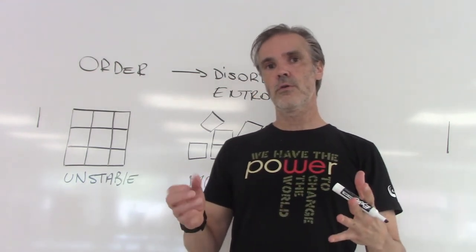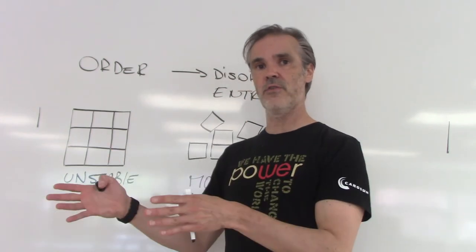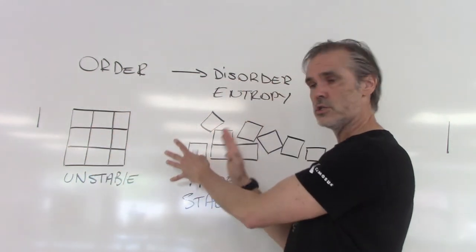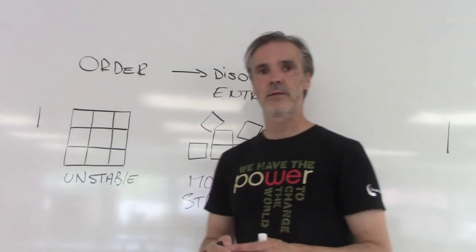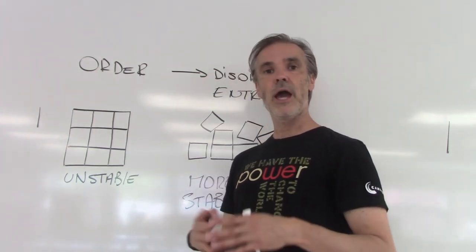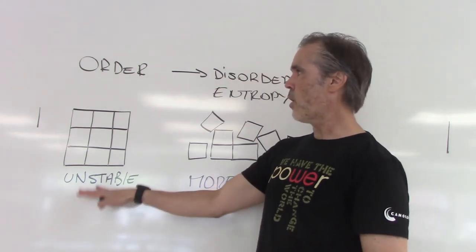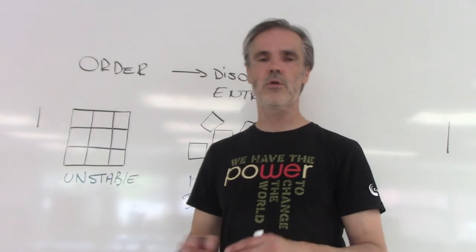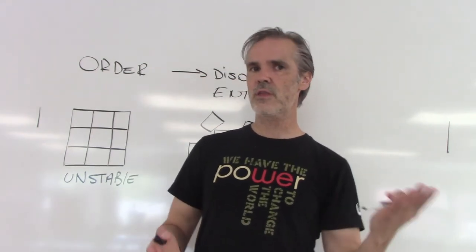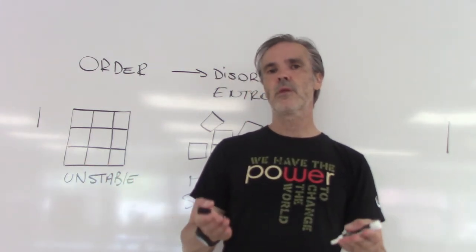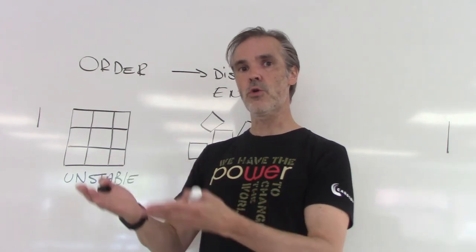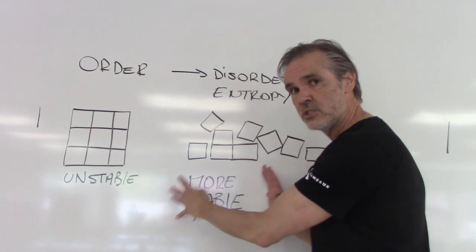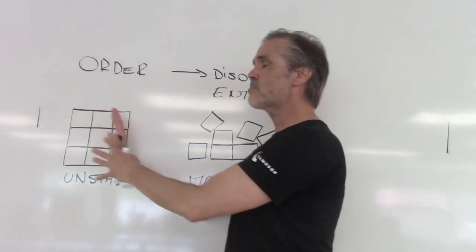The universe has a tendency to go towards a higher level of entropy — moving away from order and going towards more disorder. Why is that? Well, there are many reasons, but I can sum it up quickly: order is unstable, and disorder is far more stable. The odds are that anything will eventually go towards a more stable state.